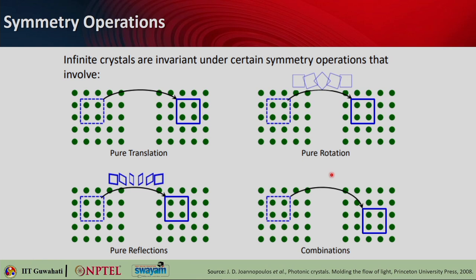When we talk about symmetry operations, one is called pure translation — moving the lattice so its orientation remains the same. Then you have rotation symmetry: if you take the lattice and rotate it, you see it gets back to the same shape. Then there is reflection symmetry: if you take a part and reflect it, you get the same kind of shape. You can also have any combination of translation, rotation, and reflection that gives you an identical transformation. These are called symmetry operations.